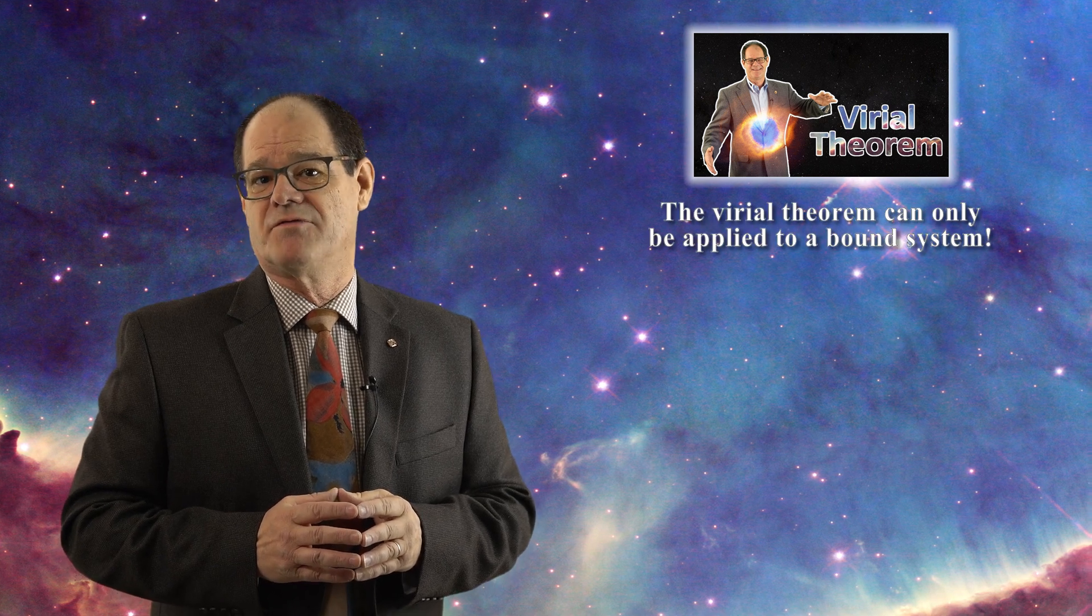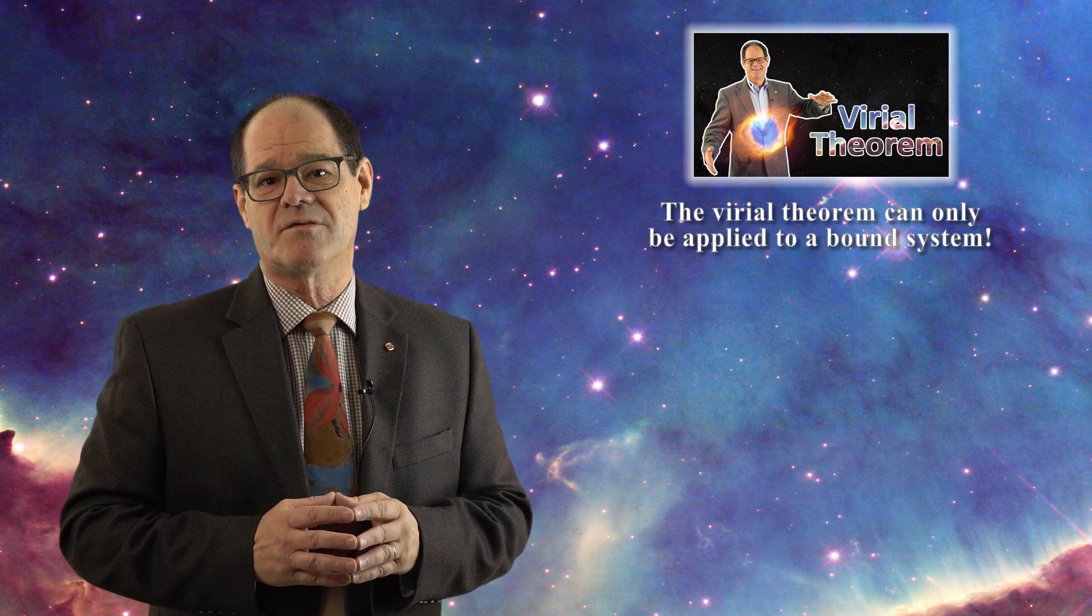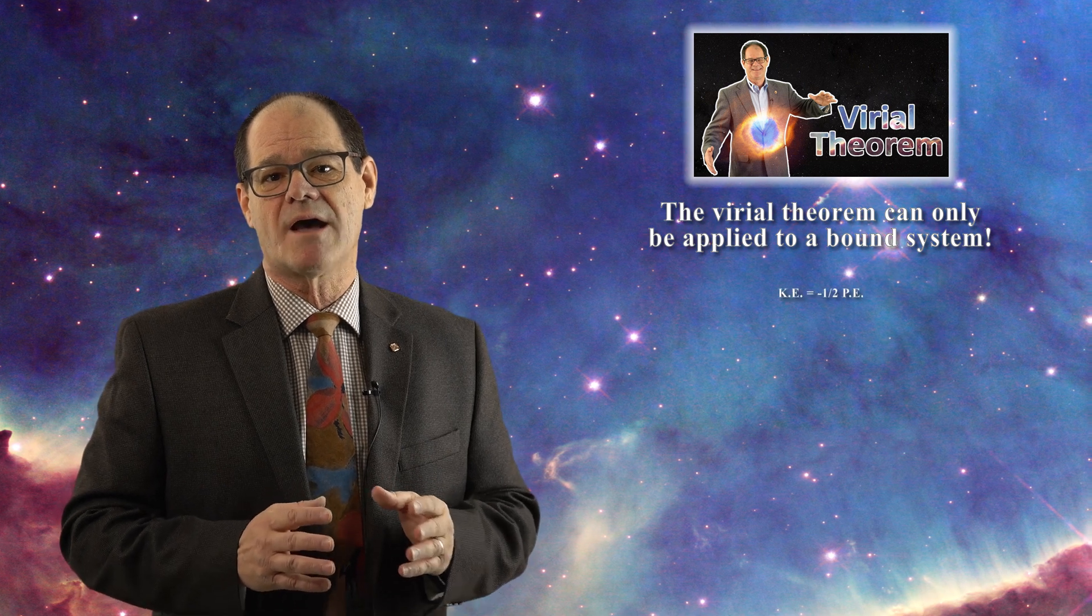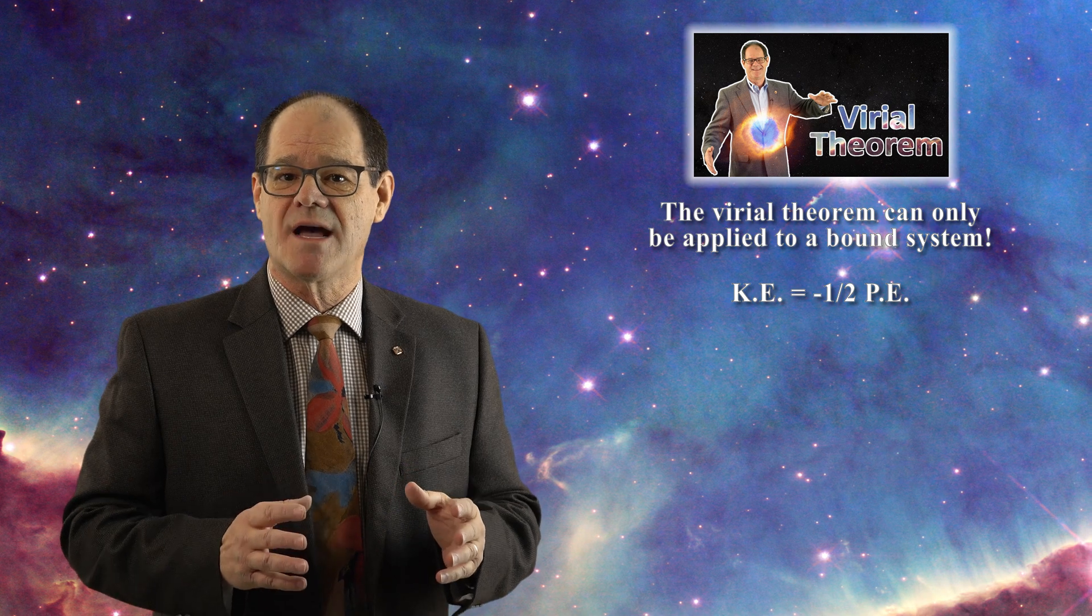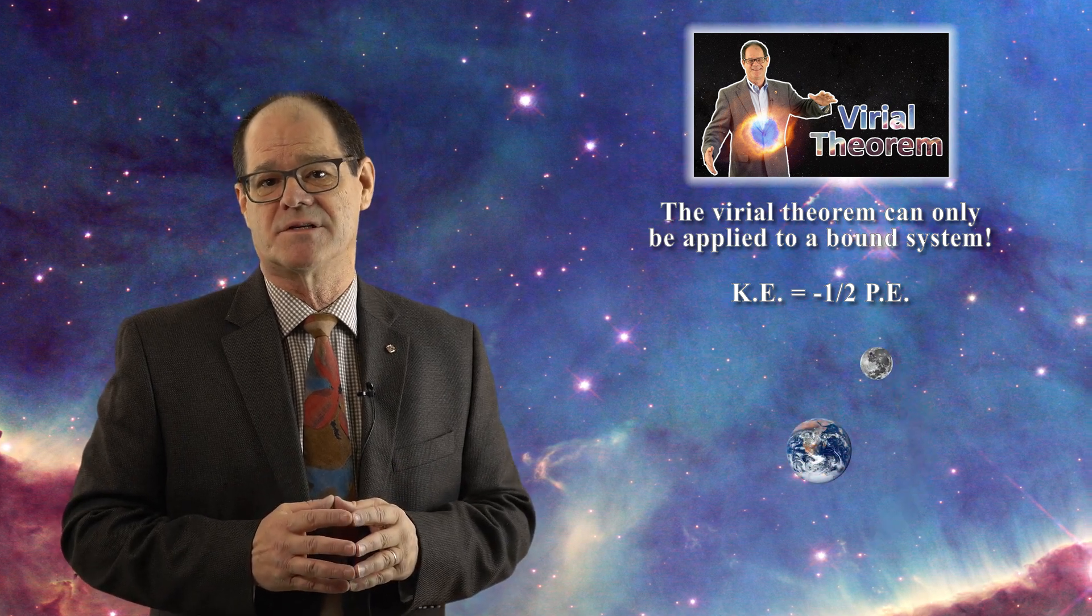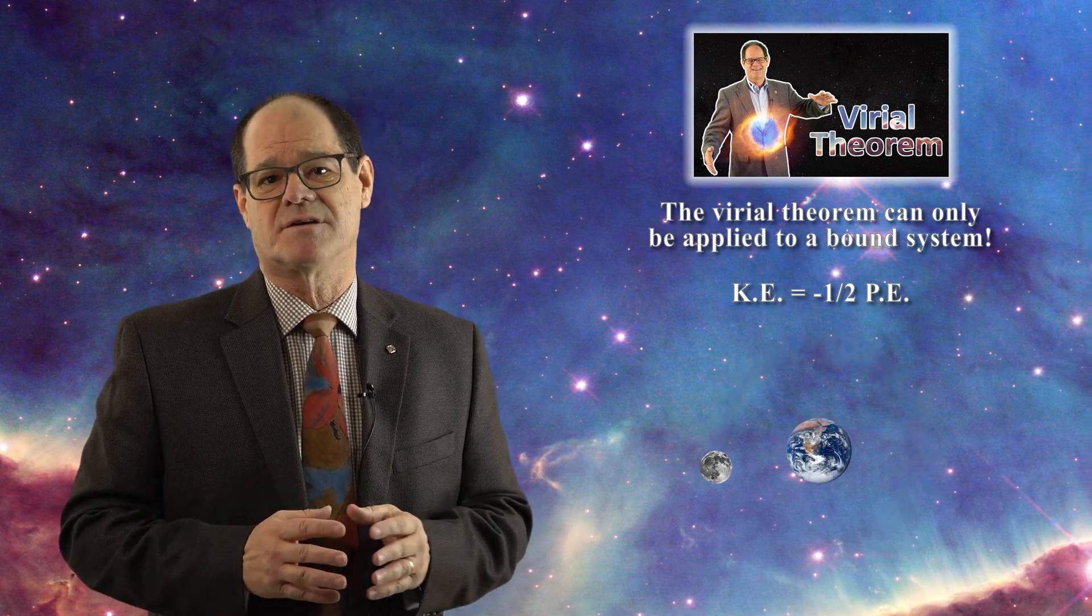Finally, astronomers use the virial theorem to treat the collapsing gas cloud, but this is also forbidden. The virial theorem can only be applied to a bound system. The virial theorem implies that the kinetic energy of the system must be equal to minus one half of the gravitational potential energy. This is true for a satellite around a planet for instance. That is a bound system.